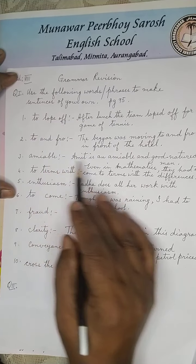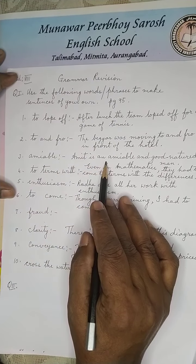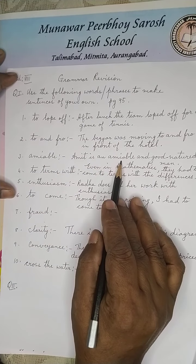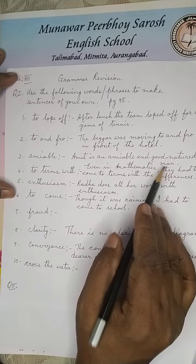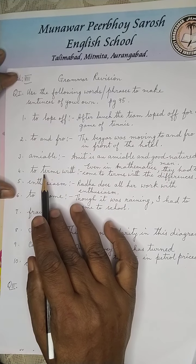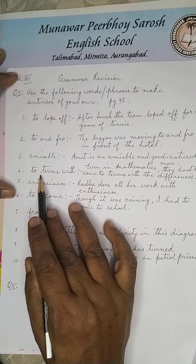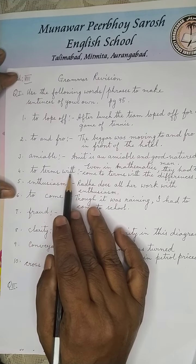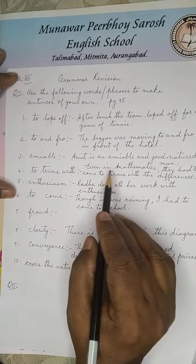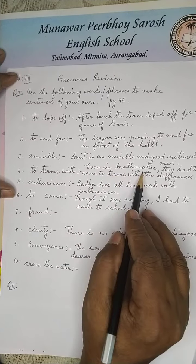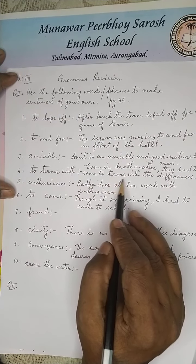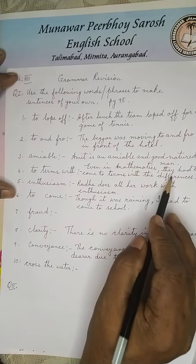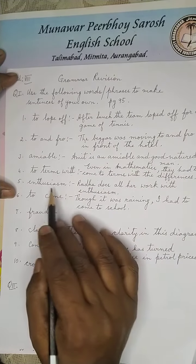Amiable: Amit is an amiable and good-natured man. In terms with: Even in mathematics, they had to come in terms with the differences.